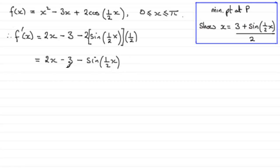Okay, so we've got the gradient at any point. Now we just need to say at a minimum point, f'(x) must be equal to 0. So therefore we have this equation: 2x minus 3 minus the sine of half x must equal 0.